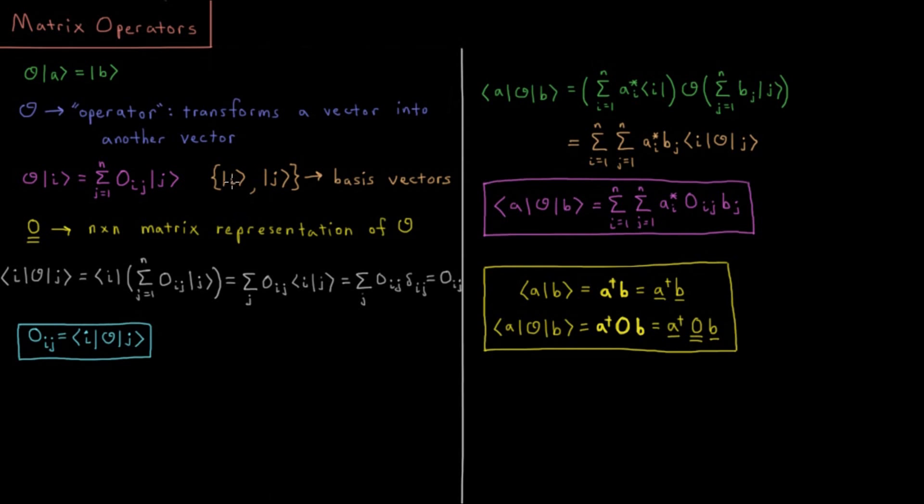So i is a basis vector, j is all of the other basis vectors in this n dimensional space. We can represent the effect of O on any given basis vector as a sum over its coefficient of how much it's transformed into any of the other basis vectors.